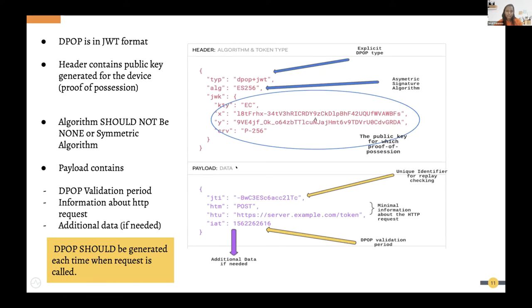The client generates the public-private key pair and puts the public key in the header to prove ownership — this is the proof of possession for that particular client. WSO2 has also provided a client utility that you can use to generate DPoP tokens.